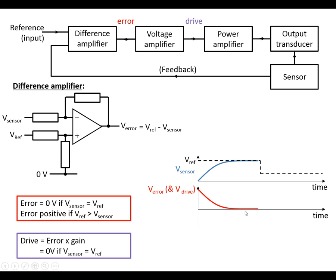In this circuit it will always aim for the error signal to be zero. So when V sensor and V ref are the same the error signal is zero and it will stop. And if we drop down the reference voltage, we've now got the reference voltage less than the sensor, so the error signal is going to be negative, driving the motor the other direction until the error signal is zero when the sensor and reference are the same.